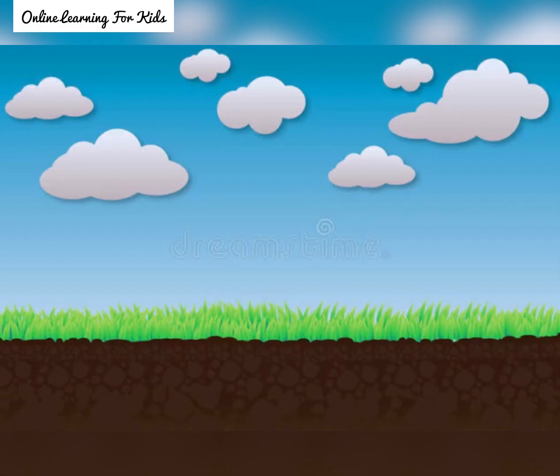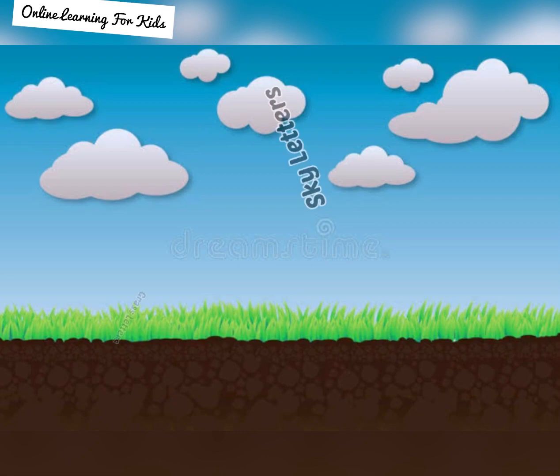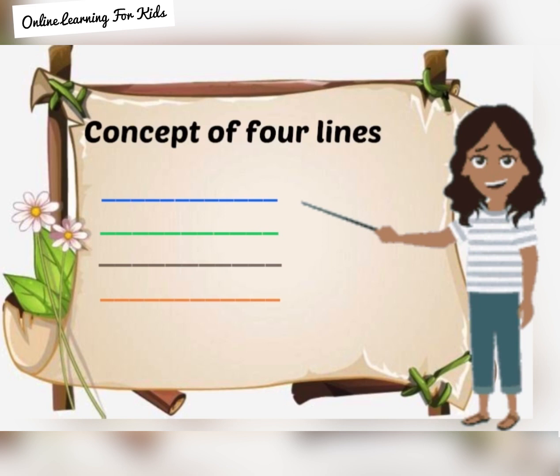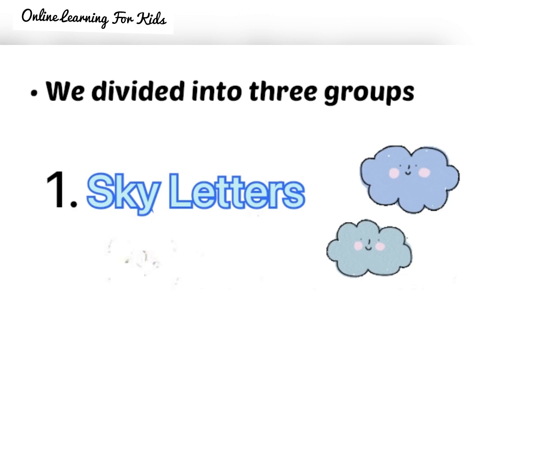Our topic is sky letters, root letters, and grass letters. First, we will learn the concept of four lines. In the English language, we have four lines: the first line is the sky line, the second line is the fence line, the third line is the grass line, and the fourth line is the root line. We divide letters into three groups: the first group is sky letters, the second group is grass letters, and the third group is root letters.